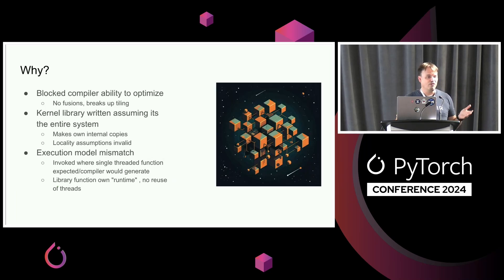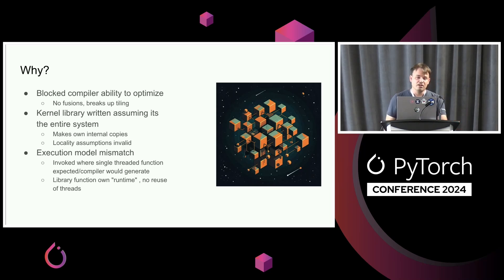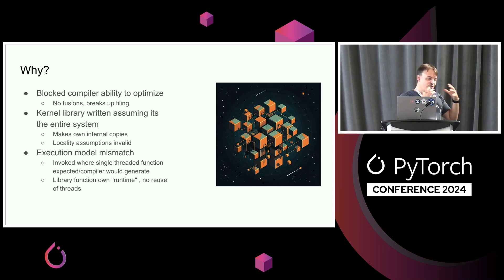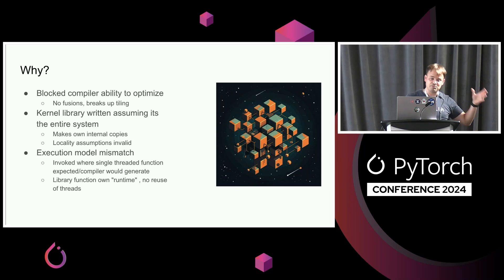Why is this? For one, it blocked the compiler's ability to optimize. By using this kernel for these operations, it disabled the ability to do fusions, it broke up tiling — so suddenly you have additional synchronization, additional transfers, additional serialization in the process. A lot of these kernel libraries are actually written assuming they are the entire system. In this case, the kernel made internal copies of all the data before operating on it, meaning additional copies that were not required. Also, they're written assuming they control everything, so the tuning and optimization involves a very delicate balance of exact utilization, considering threading, the read-write ports of the instruction dispatch, etc.